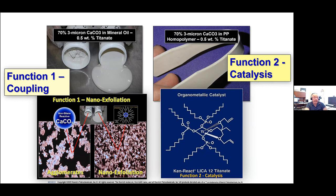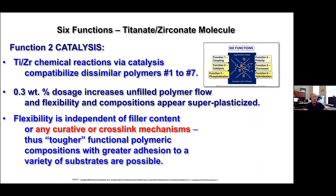When we first got started talking about wetting out calcium carbonate, we didn't realize that when we got the 70% three-micron filled polypropylene homopolymer to work, it wasn't just because we were wetting out and deagglomerating the calcium carbonate — the titanate itself was re-polymerizing the polymer phase independently. The calcium carbonate was just carrying the titanate catalyst. Function 2 catalysis is very important: it compatibilizes similar polymers 1 through 7, so you're able to co-polymerize different polymers with additional condensation polymers. The sweet spot is between 2 to 4 parts per thousand in the unfilled polymer.